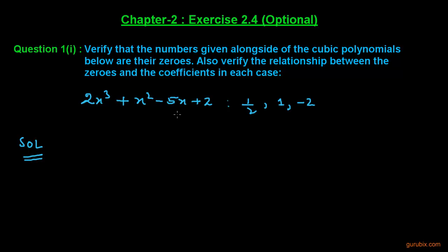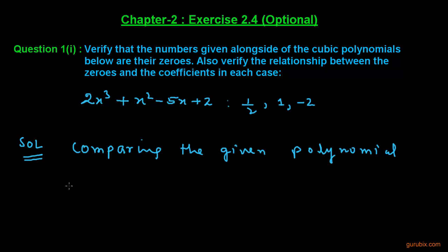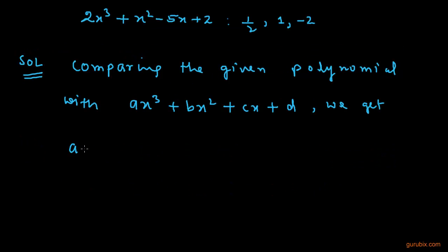First of all, we shall compare the given polynomial with the standard form of a cubic polynomial: ax³ + bx² + cx + d. We get a = 2, b = 1, c = -5, and d = 2. These a, b, c, d are the coefficients of the given polynomial.